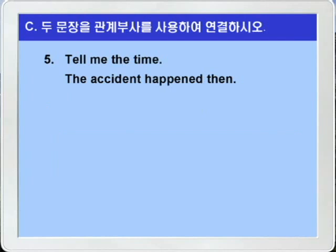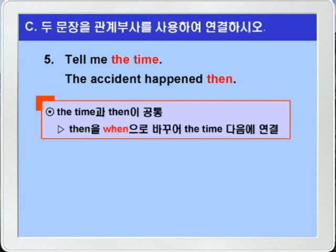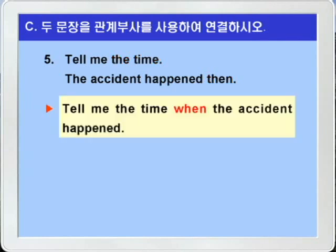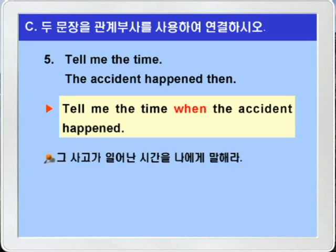마지막 5번입니다. 'Tell me the time. The accident happened then.' 나에게 그 시간을 말해주세요 — 그 사고는 그때 일어났다. 두 문장에서 공통되는 것은 the time과 then이죠. 따라서 the time을 선행사로 하고 시간의 부사 then을 시간의 관계부사 when으로 바꿔서 the time 뒤에다 연결시키면 되겠습니다. 'Tell me the time when the accident happened.' — 나에게 그 사고가 일어난 시간을 말해주세요.